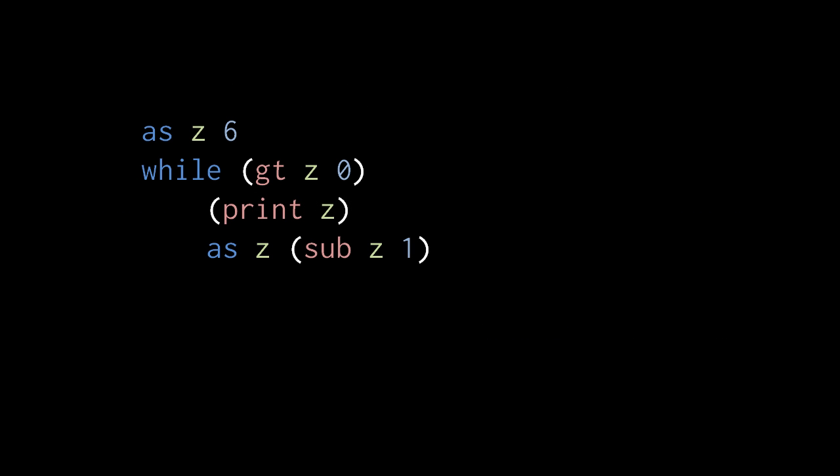So consider what this code does. First, we assign 6 to a variable named z, and then we encounter a while loop, where the condition asks, is z greater than 0? Currently, z has the value 6, so yes it is greater than 0, so this returns true, and we execute the body, which prints the value of z, which is currently 6, and then assigns to z the value of z minus 1. z minus 1 is 5, so we assign 5 to z.